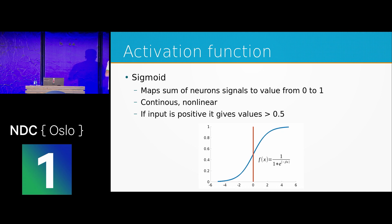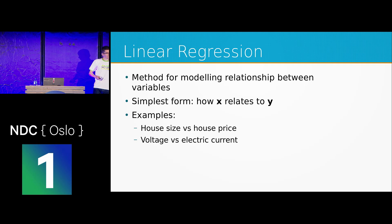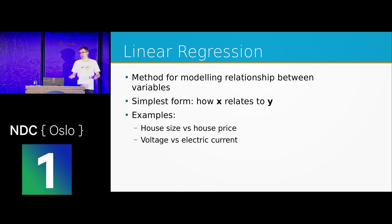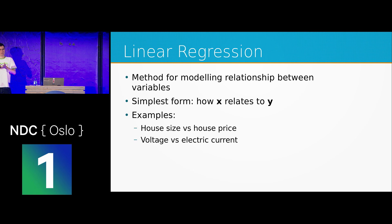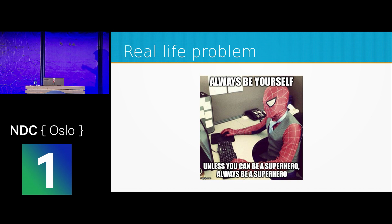The problem with neural networks is that they are quite hard to understand at first glance, especially for beginners — there are a lot of indices and math. So we'd like to explain how it works with a simple example: linear regression. Linear regression is a simple method for modeling relationships between variables, like checking how house price relates to its size. We also like to use real-life examples, and we think superheroes have really cool lives, so we'll use examples from their world.